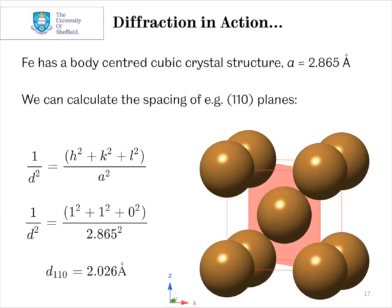We can use the equation we saw a moment ago to work out the spacing of (110) planes. So, we take, again, 1/d² = (h² + k² + l²)/a² for a cubic system. We substitute in the Miller indices into this and the lattice parameter.